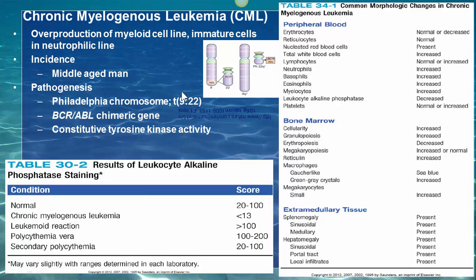Such translocation creates a chimeric gene, BCR-ABL. Normally, ABL codes for ABL protein that has tyrosine kinase activity that is very well regulated. Fusion with BCR, however, makes ABL lose the ability to shut off the tyrosine kinase activity. This constitutive tyrosine kinase activity activates cell signal transduction pathways leading to continued proliferation, decreased differentiation, and decreased apoptosis of myeloid cells.